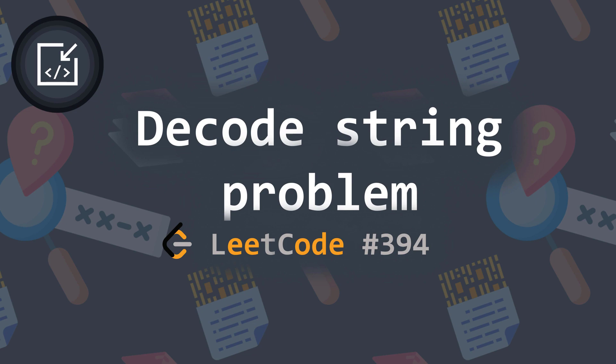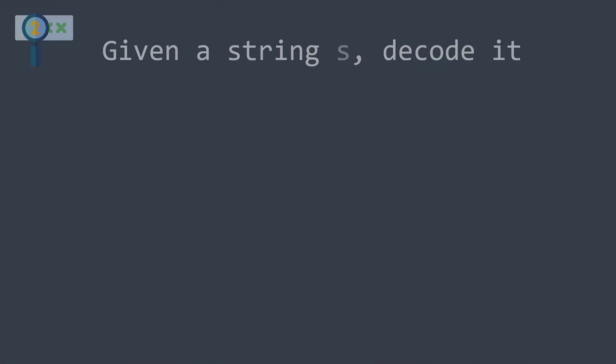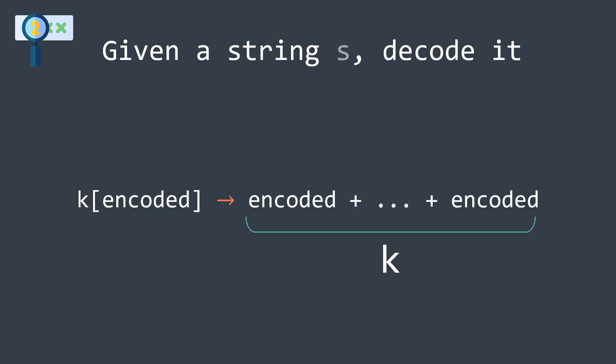Welcome to this new video where we will solve a challenging coding problem: the decode string problem. We have an encoded string s and we want to decode it. The encoding rule is a positive integer k followed by an encoded string between brackets that has to be repeated k times in the final output.